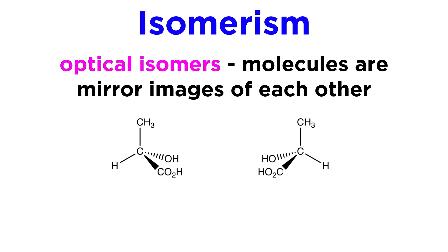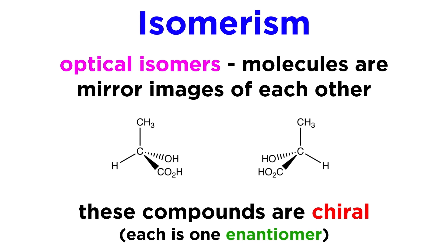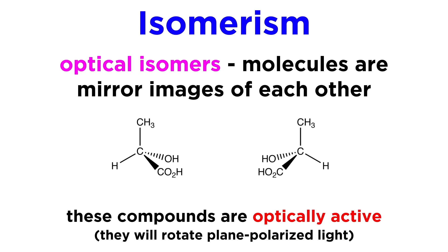There are also optical isomers, where molecules are simply mirror images of one another. A compound with two optical isomers is said to be chiral, and each of them is one of two enantiomers. When a molecule is chiral, it cannot be precisely superimposed on its mirror image, as the mirror image is its enantiomer and they are different molecules. Additionally, any chiral compound will be optically active, meaning it will rotate plane-polarized light.